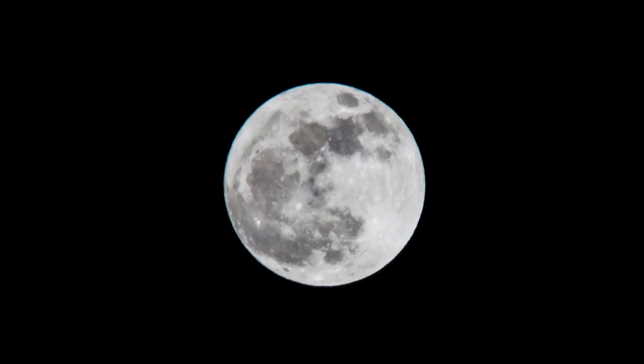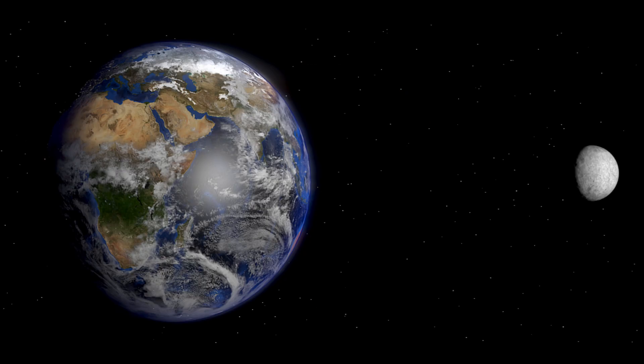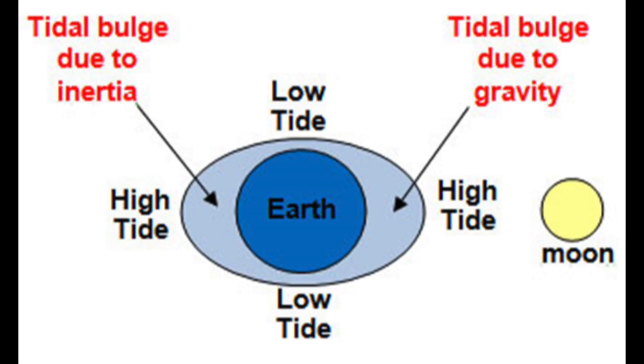What affects the tides? Well, the biggest factor is the Moon. Because of its size and closeness to Earth, the Moon causes high tides along a parallel line across the Earth, and causes low tides where a 90 degree angle is formed.